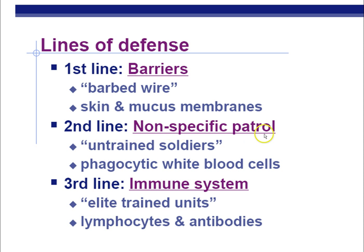The second line of defense is a nonspecific patrol — we're just looking for any invaders inside our body. If we find something recognized as foreign, like an antigen on the outside of a bacterial cell that the immune system recognizes as not part of the body, it will eat it in a process called phagocytosis. The third line of defense is your immune system — the elite-trained units. They're very specific against one type of invader, involving lymphocytes and antibodies. So we have two nonspecific lines of defense, either preventing invaders from getting in or destroying them once they're inside, and then a very specific third line that only goes after one attacker, like a type of staphylococcus or a virus.